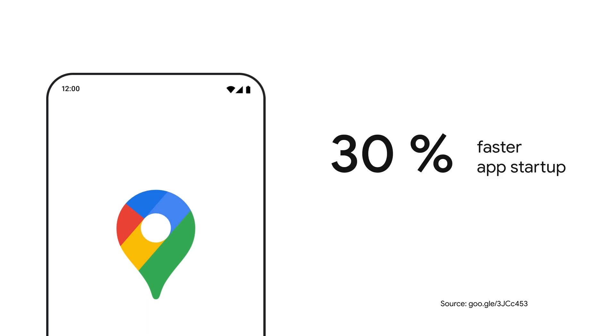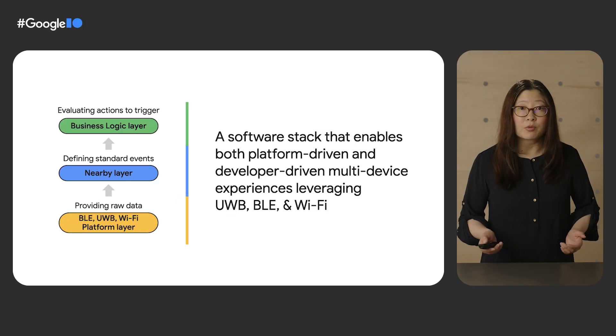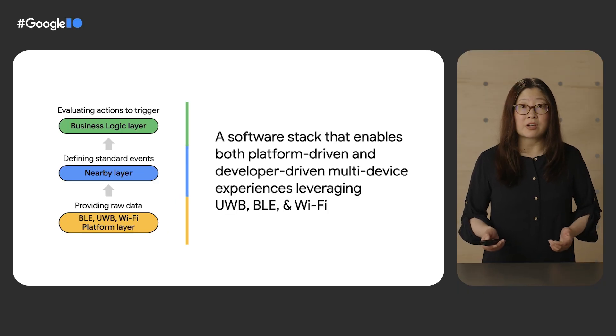The team behind Google Maps for Android improved the app's startup time by 30% after introducing Baseline Profiles, a new way to improve app launch and hot code path performance.